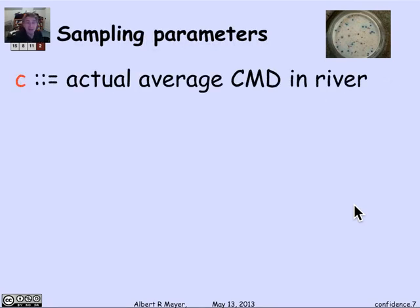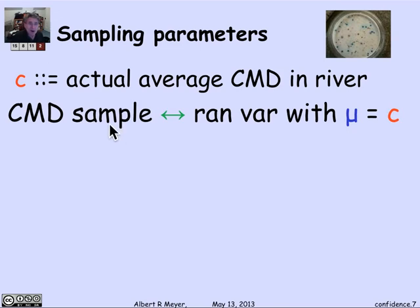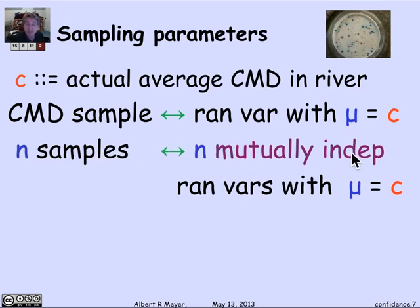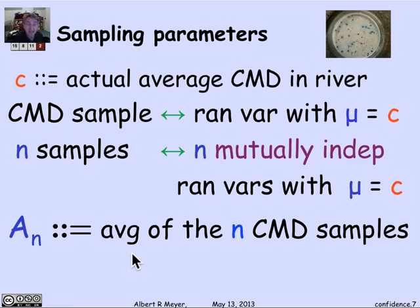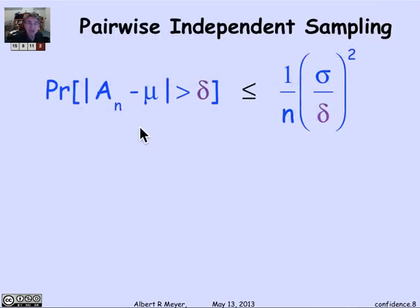C is the actual average CMD in the river — that's what we don't know; we're trying to estimate it. Our samples correspond to a random variable: we're taking a measurement of the CMD at a random time and place, and that defines a random variable whose expectation is the unknown C. So we've defined by our sampling process a random variable with mean mu. We've done it with 32 variables, so n samples mean n mutually independent random variables, all with mean equal to the number I'm trying to estimate. A_n is the average of the n CMD samples, so we have A_32 that we're trying to understand.